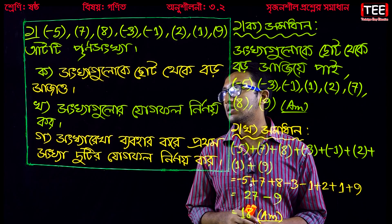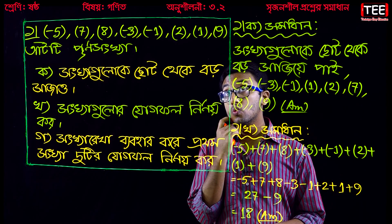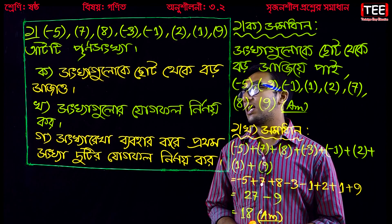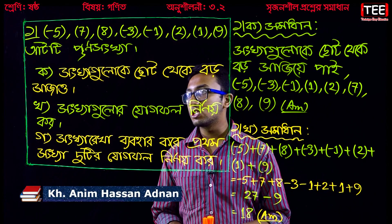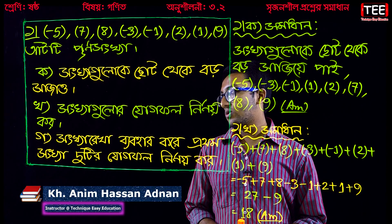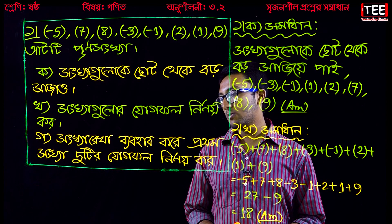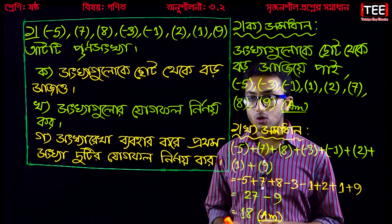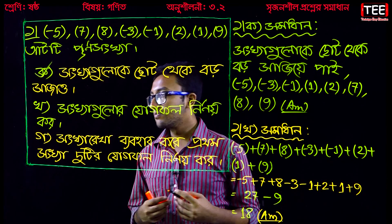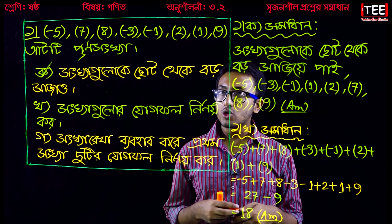The values we are working with are: minus 5, 7, 8, 3, minus 1, 2, 1, 9, and 80.